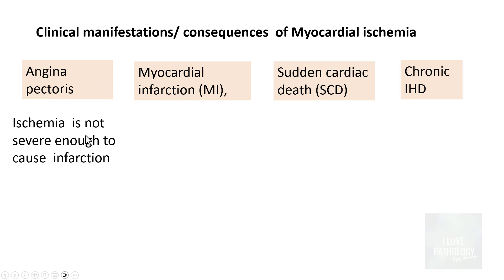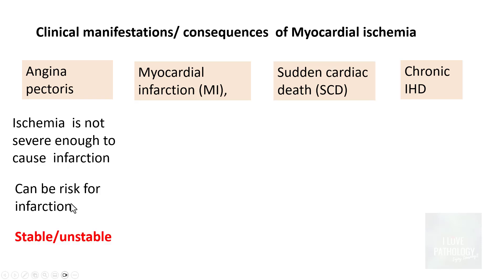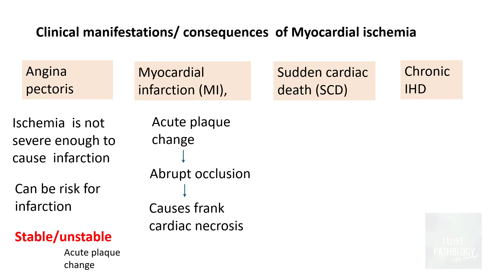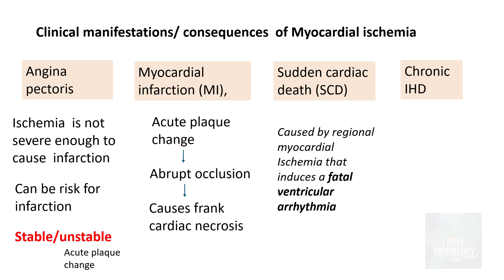Angina pectoris involves ischemia that is not enough to cause infarction, but it can be a risk for further infarction. It is categorized into stable angina and unstable angina. Unstable angina is due to acute plaque change where there is some damage involving the plaque, whereas in stable angina there is no such plaque damage.